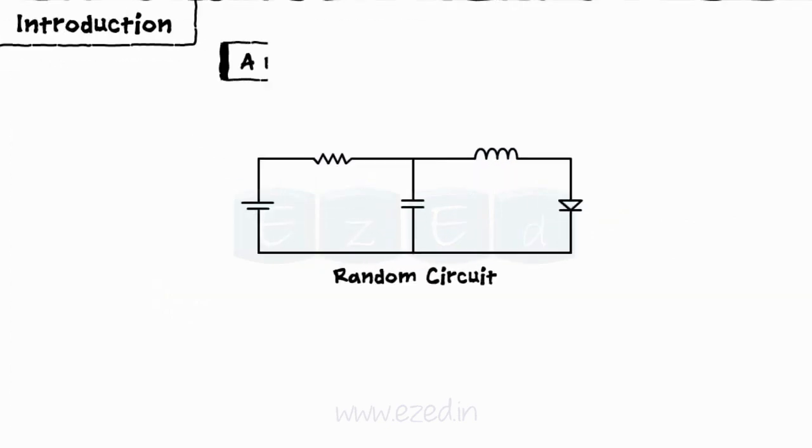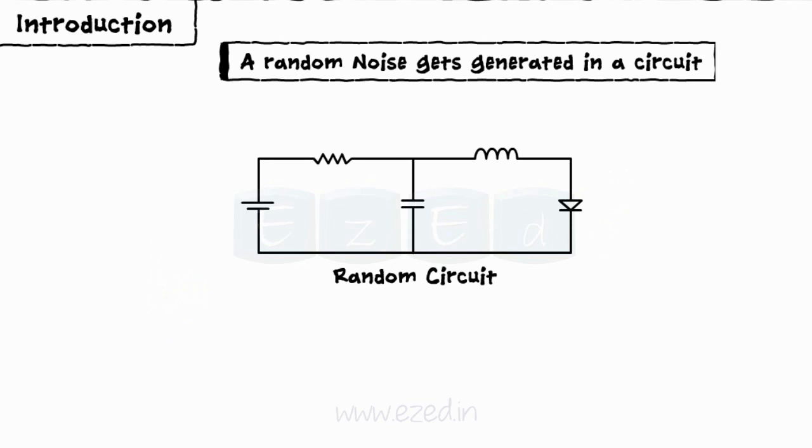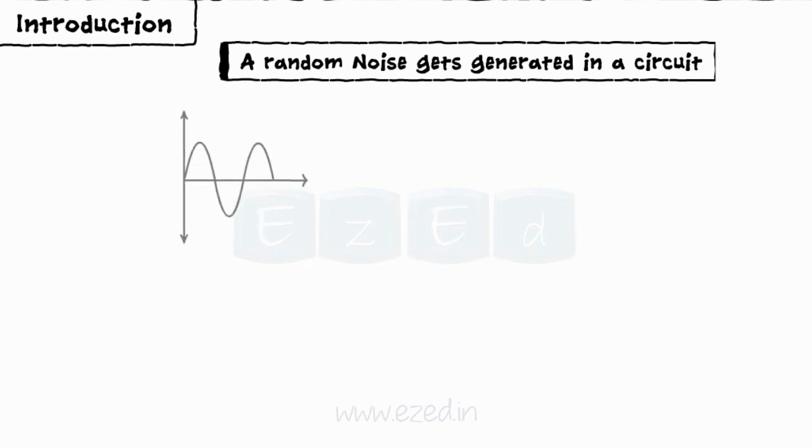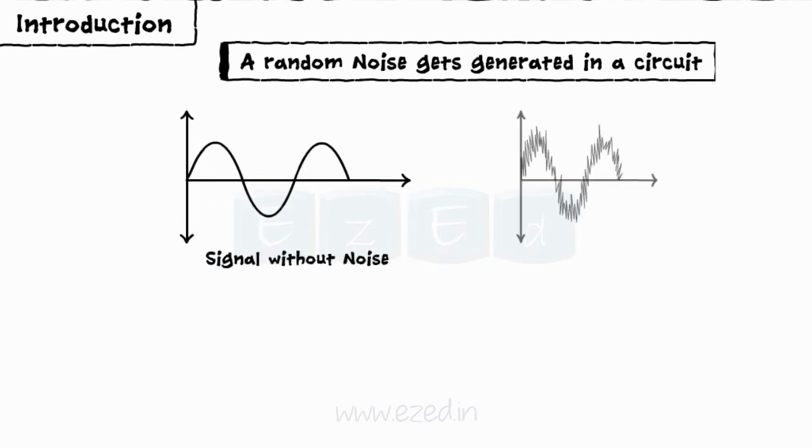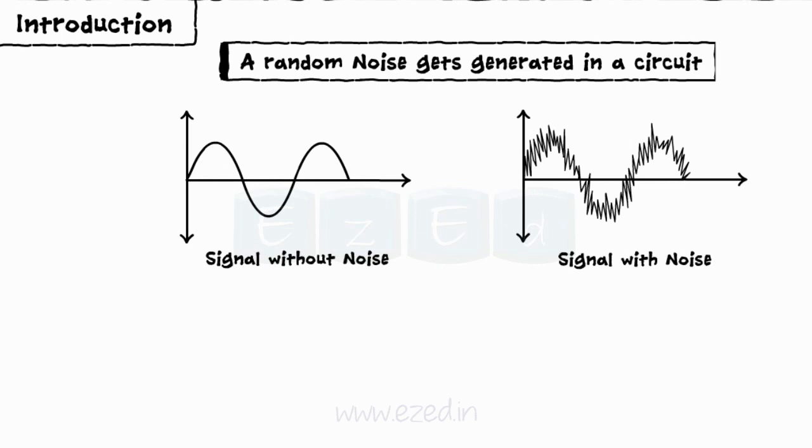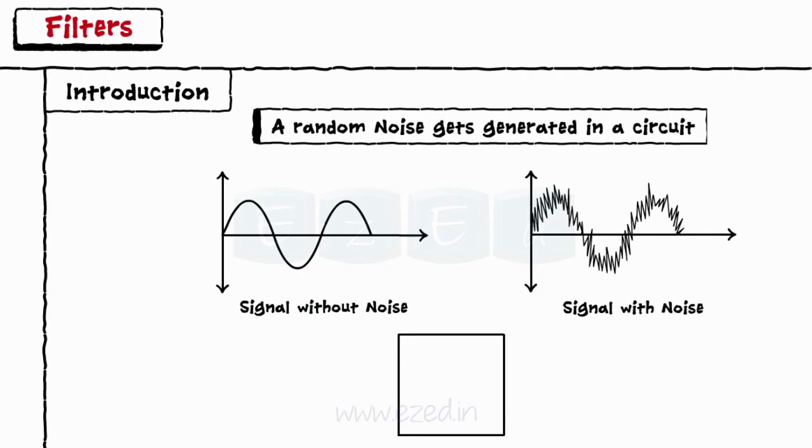Many times a random noise gets generated in an electronic circuit due to different components such as resistor, inductor, capacitor, diode, etc. This noise degrades the output of the circuit if not eliminated. To remove this noise or unwanted signal, a special type of circuit is designed which is called a filter circuit.